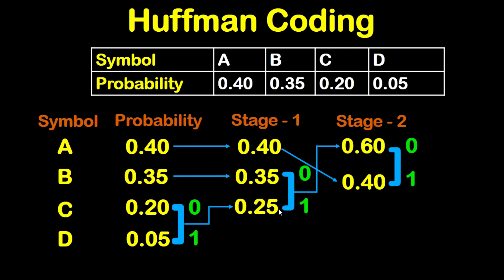Now again we will take the least two probabilities, which is 0.35 and 0.25, and put 0 at the top number and 1 at the bottom number. We will sum these two numbers: 0.35 plus 0.25 gives 0.6. For the number 0.4, we place it below 0.6 because numbers should be in descending order.